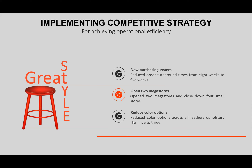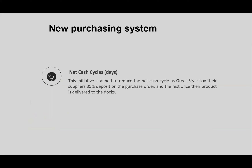The third initiative is to reduce color options — reducing color options across all leather upholstery from 5 to 3. This detailed initiative is aimed to reduce the net cash cycle. Great Style pays their suppliers a 35% deposit on the purchase order and the rest once their product is delivered to the docks. If you have a product in the warehouse, you will have a 65% or 35% payment split.